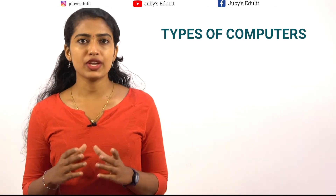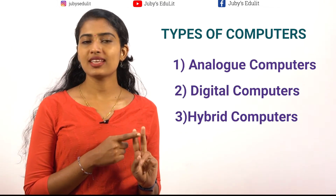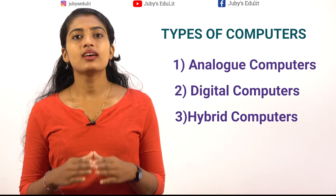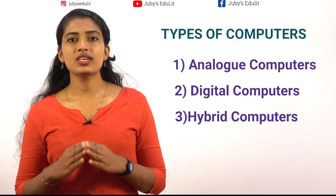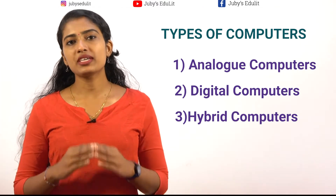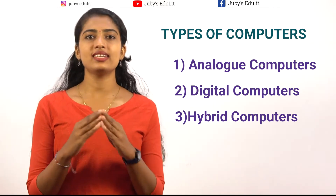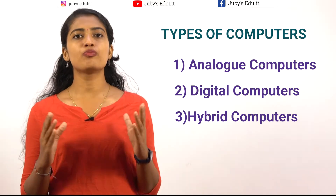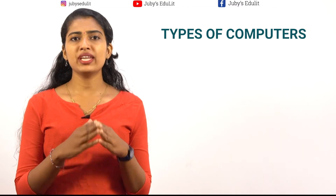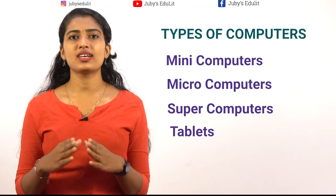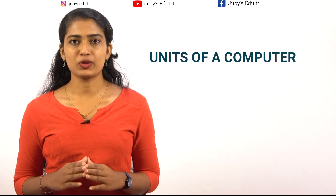Now let's see the types of computers. On the basis of the nature of operations, computers are divided into three types: analog computers, digital computers, and hybrid computers. Analog computers process analog data, which is in the form of signals and information. Digital computers process digital data, and hybrid computers process both analog and digital data, combining the advantages of both. Based on size, computers are categorized as mini computers, micro computers, super computers, tablets, laptops, etc.